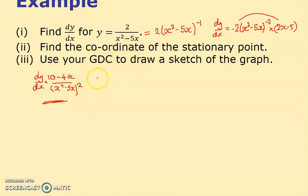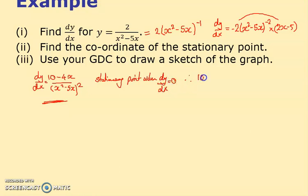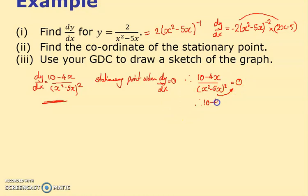Now find the coordinates of the stationary point. You should write something like this in the exam: stationary point when dy/dx = 0. So clearly show that, and therefore (10 - 4x) over that bracket squared equals zero. The great thing about a fraction equalling zero is you can effectively just consider the numerator, since multiplying anything by zero gives zero.